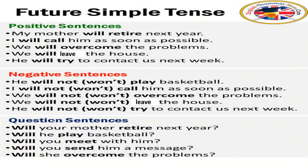Let's see more examples. Positive sentence: 'My mother will retire next year' — maybe she is 59 and will be 60 next year so she will retire. In negative: 'My mother will not retire next year.' And the interrogative: 'Will your mother retire next year?' — you simply move 'will' to the front.